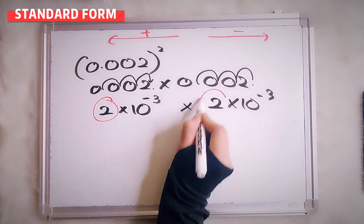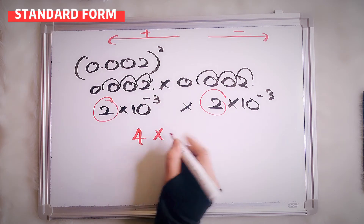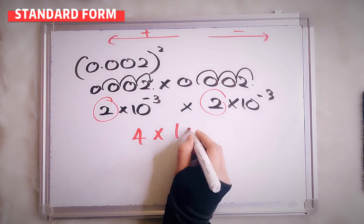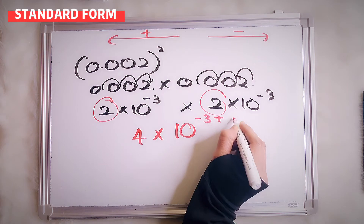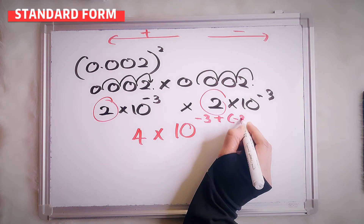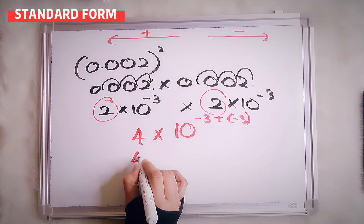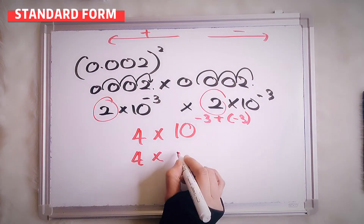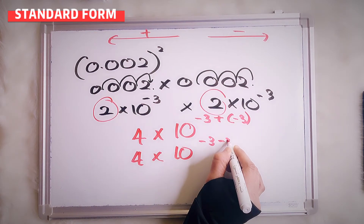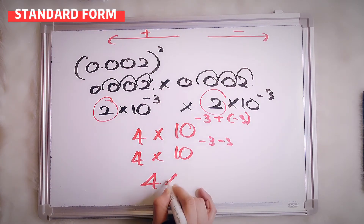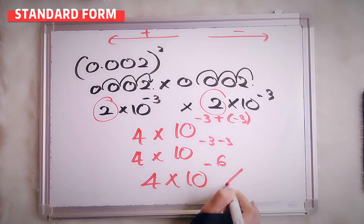So 2 times 2 equals 4. Multiply by 10: negative 3 plus negative 3. Plus minus will be minus. So negative 3 plus negative 3 — your answer will be 4 times 10 to the power of negative 6.